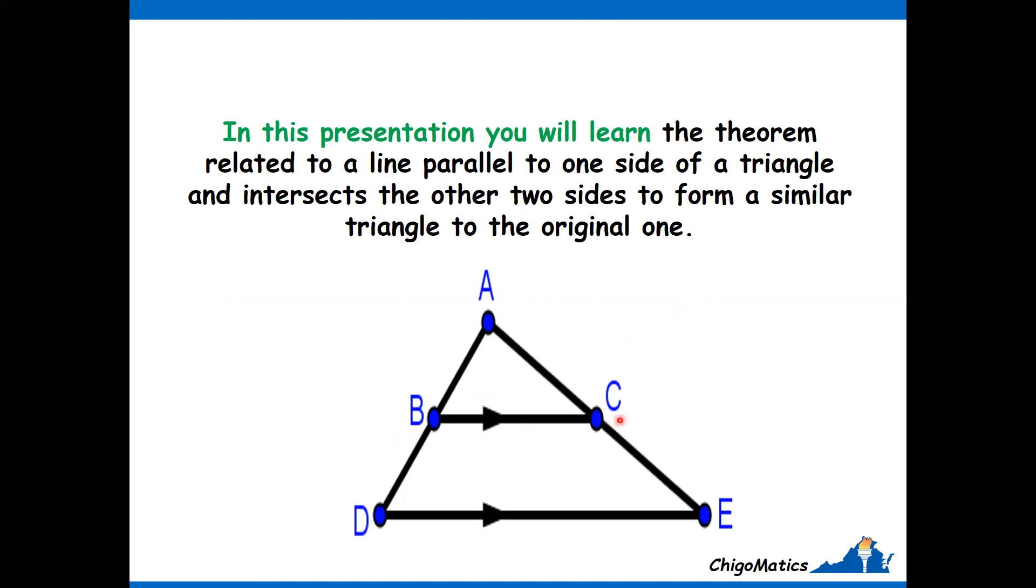This is the line DC and it intersects AD and AE, so triangle ABC is formed. It has a relationship between the bigger triangle or the original one, ADE. Let us look at what the theorem says.